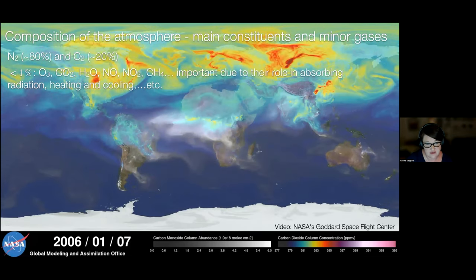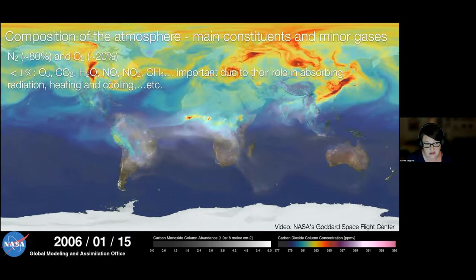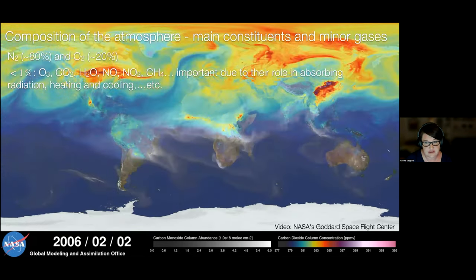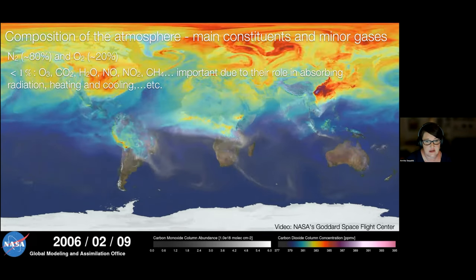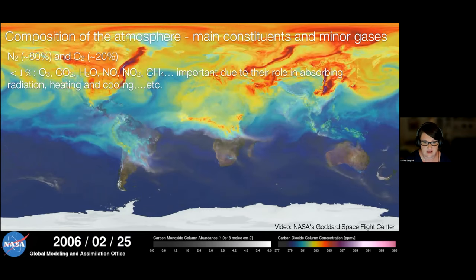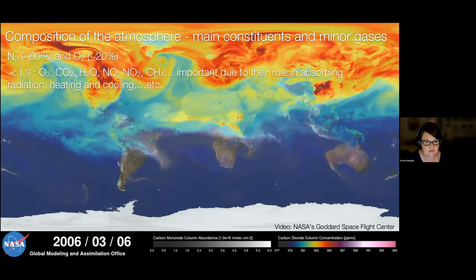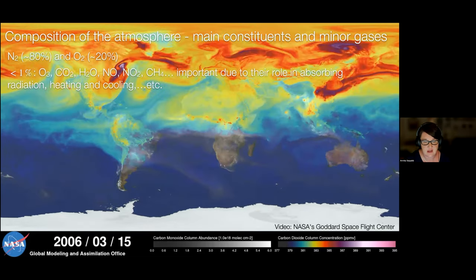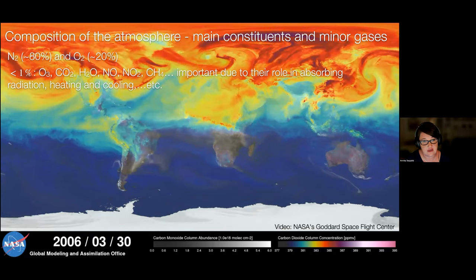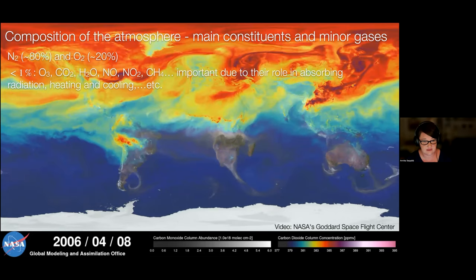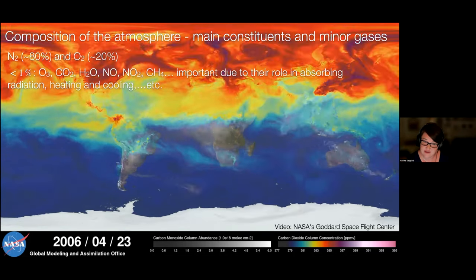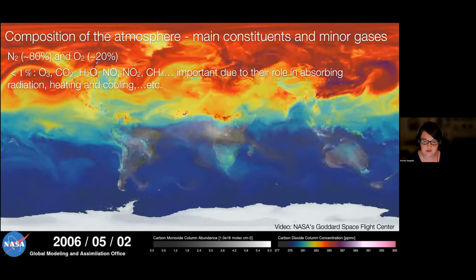The composition of the atmosphere is really important. Nitrogen and oxygen make up almost 100% of total molecules. Less than 1% are minor gases or minor constituents — gases like ozone, CO2, water vapor, NO, NO2, and methane. Although there's very little of them in the atmosphere, they're really important because they absorb both incoming solar radiation and radiation coming from Earth's surface. The surface, being a radiating blackbody, emits upward, and some of that radiation is absorbed in the atmosphere. I'm particularly going to come back to ozone.